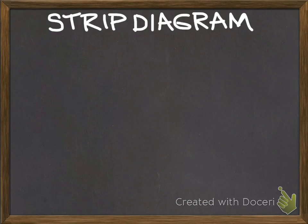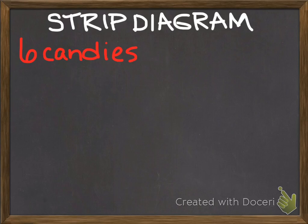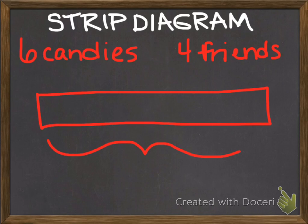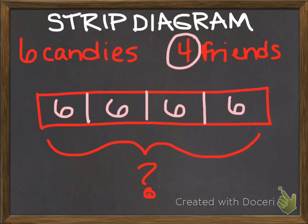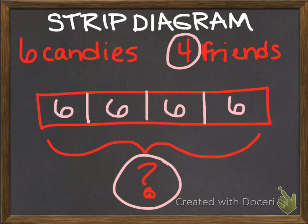Let's take a look at what multiplication looks like on a strip diagram. Remember, she gave away six candies each to four friends. I'm not sure how much it is total, but I know she gave it to four friends, so we have four sections that this candy is in. She gave six to this friend, six to this friend, six to this friend, and six to this friend. This strip diagram shows you that if you add up six four times, you're going to get to that total of twenty-four. This is what a strip diagram looks like when you have multiplication.